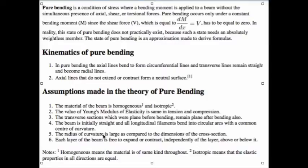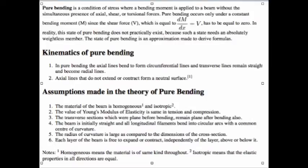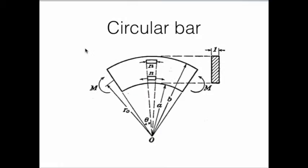Actually it's different for curved beams. This is for general normal beams. The radius of curvature is large as compared to dimension of cross section. Each layer of a beam is free to expand or contract independently of a layer above or below it. So this was just a slide talking about pure bending.